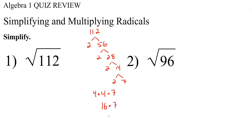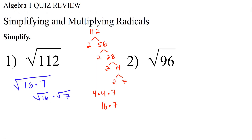So 16 is the largest possible perfect square factor of 112. We can break 112 into 16 times 7. Next, we want to go ahead and separate both of these into their own radicals. So we have radical 16 times radical 7, and we do this because we know what the square root of 16 is — it's 4. Radical 7 cannot be simplified any further, so radical 112 simplifies to 4 radical 7, and that's our answer.